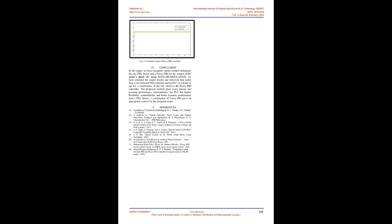4. Conclusion: In this paper, we have designed various control techniques like the PID, fuzzy and a fuzzy PID for the control of DC motor's speed. By using MATLAB simulation, we have obtained the output results and observed that rather than a conventional PID controller and an FLC, it is better to opt for a combination of the two which is the fuzzy PID controller. The proposed method gives more precise and accurate performance characteristics. An FLC has higher flexibility, controllability and better dynamic performance than a PID. Hence, a combination of fuzzy PID gives an appropriate control for the designed motor.